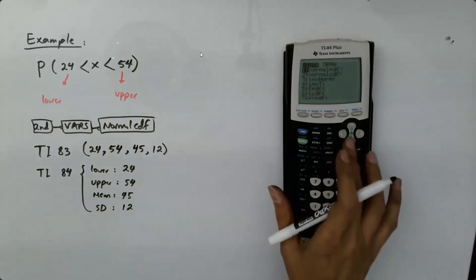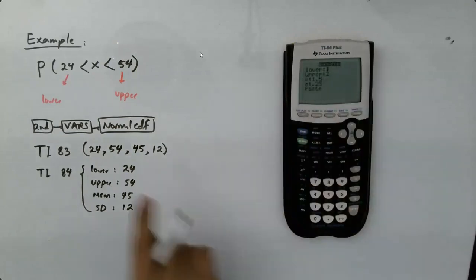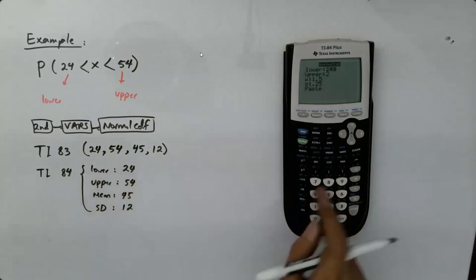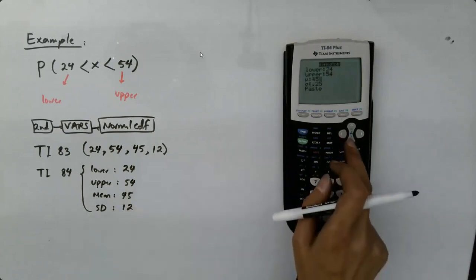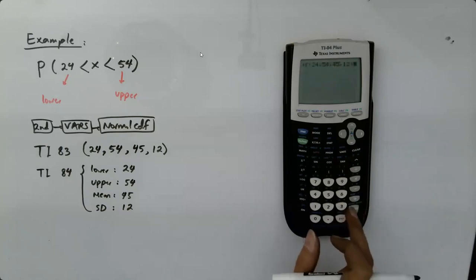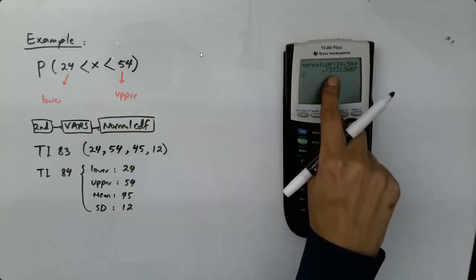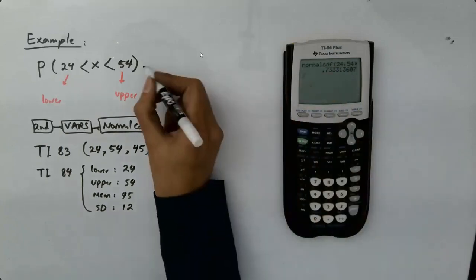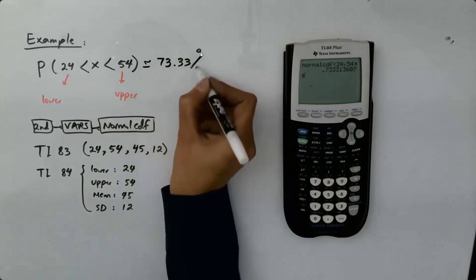So let's use our calculator. Second VARS, normalCDF. I have 24, then 54, and then we have 45, and then we have the standard deviation which is 12. And it's done. 73.33%, approximately.